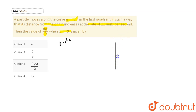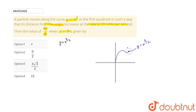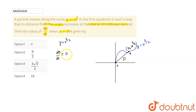Let's see what we have given. We have the curve y = x^(3/2) and a particle moves in the first quadrant such that its distance from the origin increases at 11 units per second. Let's set up our coordinate system. At any time, let the particle be at point A, given by coordinates (x, x^(3/2)), and OA is the distance D. So dD/dt = 11.